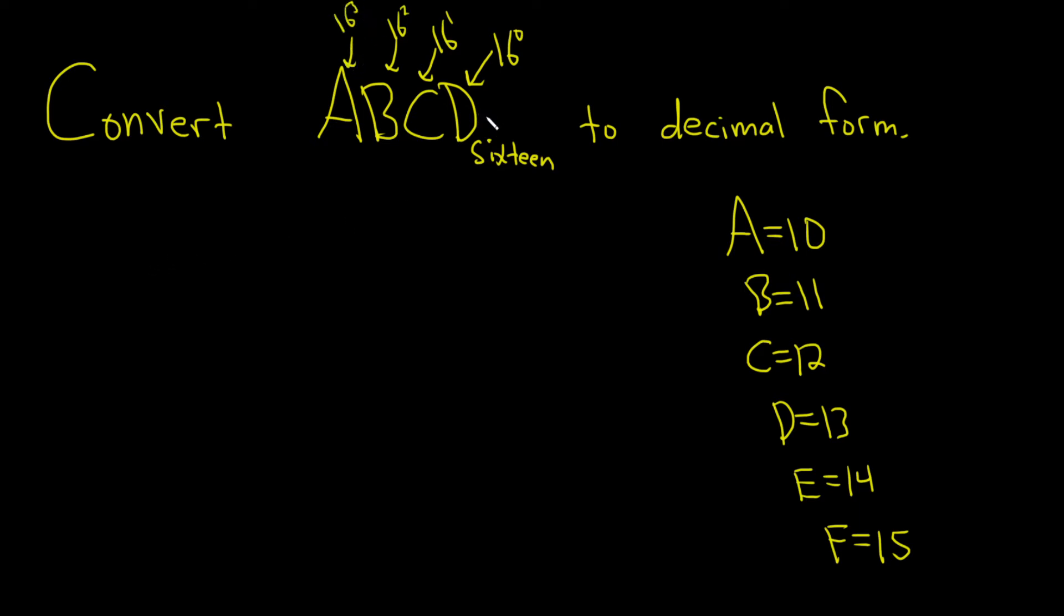So let's start with the one of the end, 16 to the 0. So 16 to the 0 times D, which is 13. So parentheses, and then plus. And then it would be 16 to the 1 times C, which is 12,